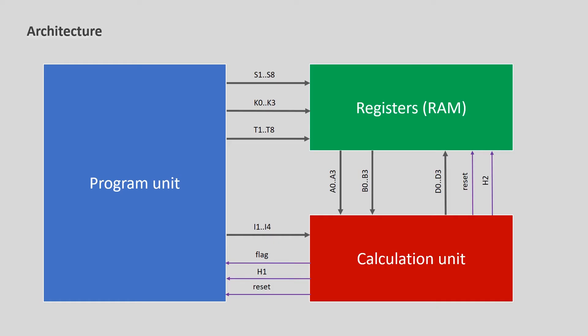The NAND 565 consists of 3 blocks: the program unit, the memory unit, and the computing unit.